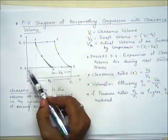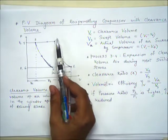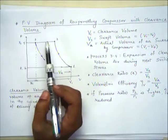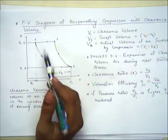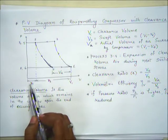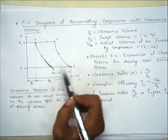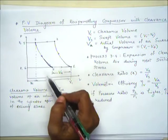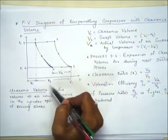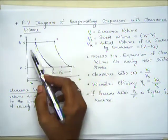On the PV diagram, the suction stroke is shown from 0 to 1; from 1 to 2 the air is compressed; and from 2 to 5 the air is delivered into the receiver tank. The clearance volume Vc is the amount of air left within the cylinder. The actual swept volume Vs starts after Vc.